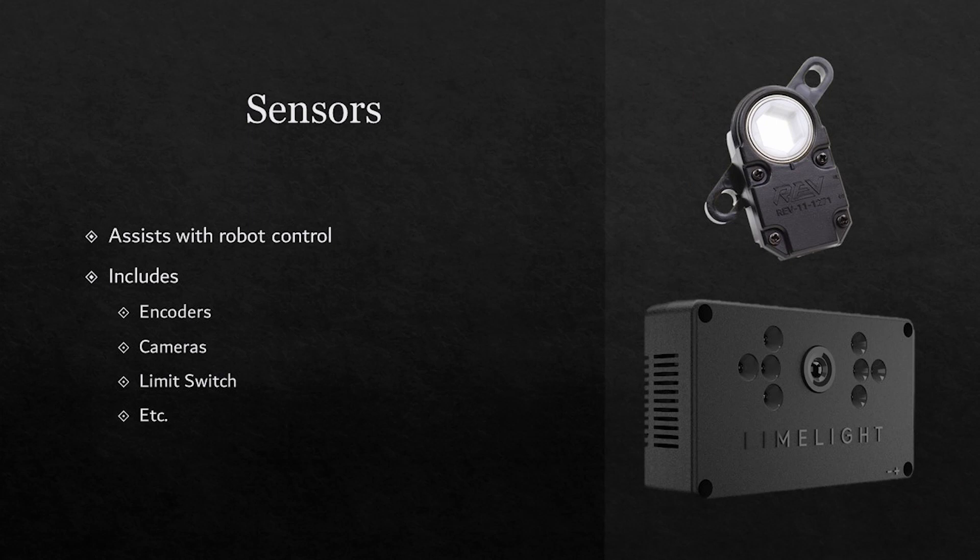Next are the sensors. These are what provide the robot with feedback when it is competing on the field. The feedback then controls what the robot does as the feedback is run through the robot's program. There are a variety of different sensors on the robot.